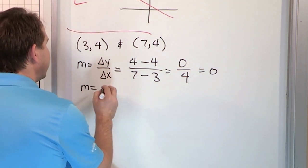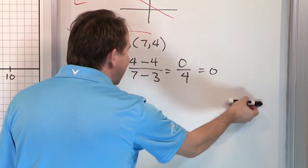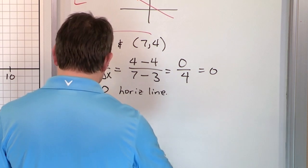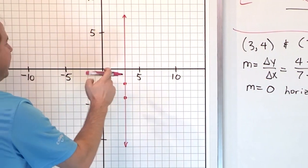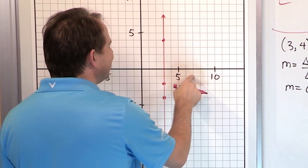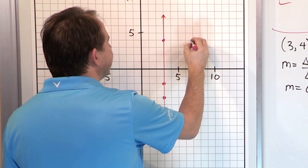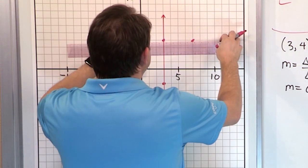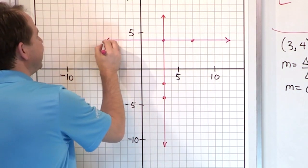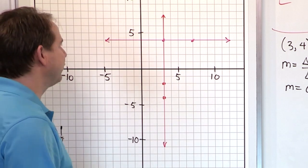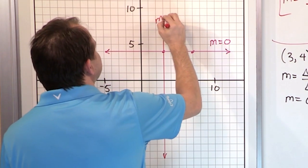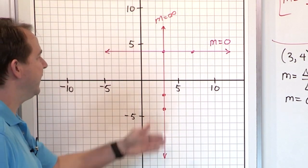A slope of 0 means a completely flat horizontal line, and we talked about that in the last lesson. Plotting it: (3, 4) and (7, 4) both have y = 4, so I get a horizontal line — exactly what the slope predicted. So m = 0 for this horizontal line. And for the vertical line from earlier, m = infinity, or undefined.